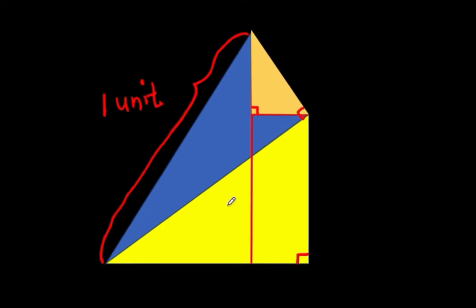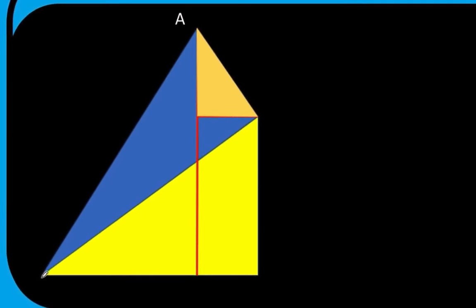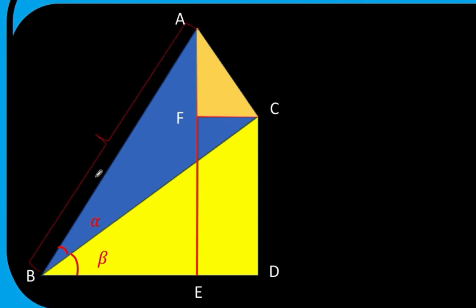Now let's put some labels on our figure. Let's call this point A, this point B, and this point C. The acute angle of the blue right triangle is denoted as alpha. Then let's call this point D, and the angle formed by the yellow triangle is denoted as beta. Let's label this point E and this point F. We know the hypotenuse of the blue right triangle is one unit, and FCDE is a rectangle, which means side FC is parallel to side ED. We can extend side ED to include side BD, so segment BD is parallel to segment FC.